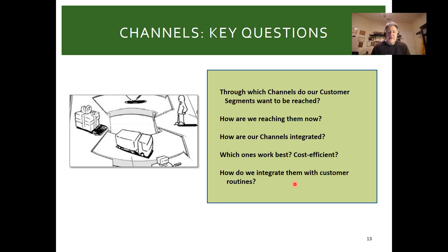We need to think about customer behaviors — where they go to satisfy their needs and get the job done. It may be through Walmart, a fancy wine shop, visiting a winery in Paso Robles on vacation, or getting a direct drop as a wine club member. We need to understand those customer routines, which means we have to get out of the building and talk to customers.